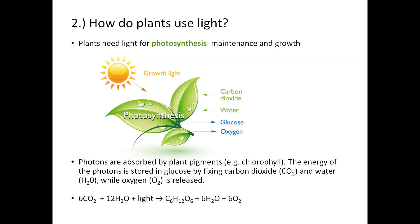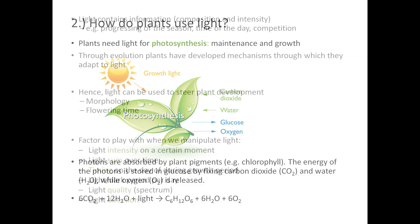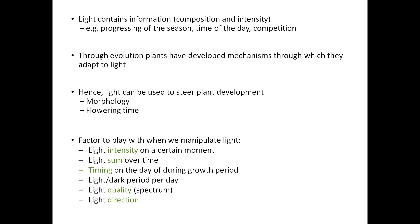Plants need light for photosynthesis. Sugars formed through this process are used for maintenance and growth. In photosynthesis, energy from photons is stored in plant pigments, and this energy is used to produce sugars from carbon dioxide and water while oxygen is released. Light also contains a lot of information — for example, on the time of day, the progression of the season, or the presence of competitors. Through evolution, plants have developed mechanisms to react to such information, and therefore light can be used to steer plant development, including morphology — the structure of a plant.